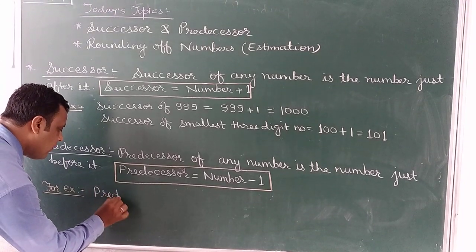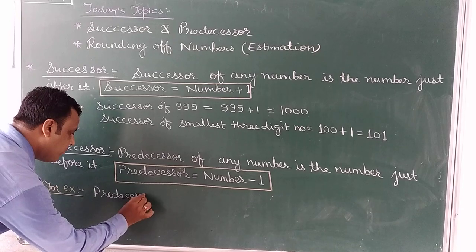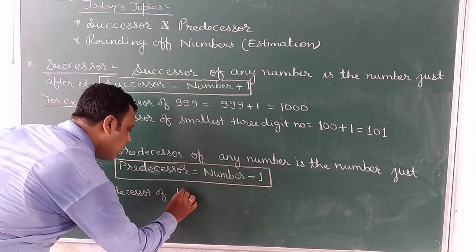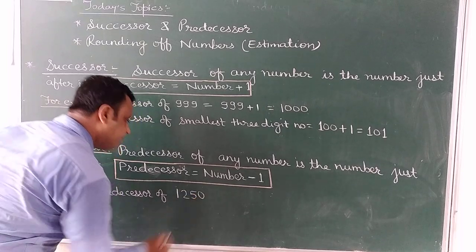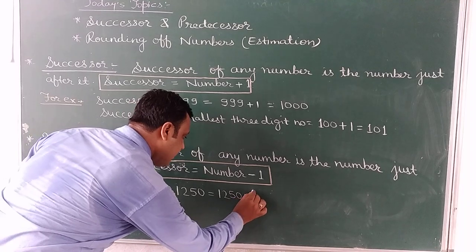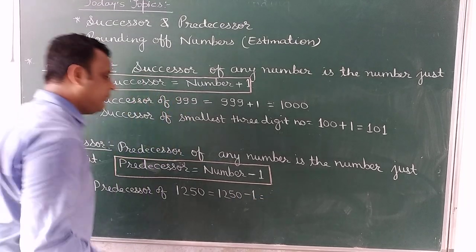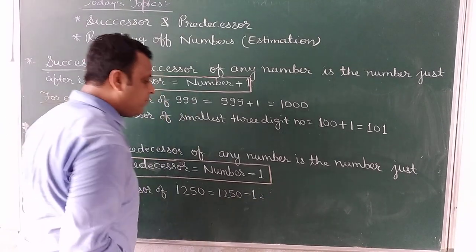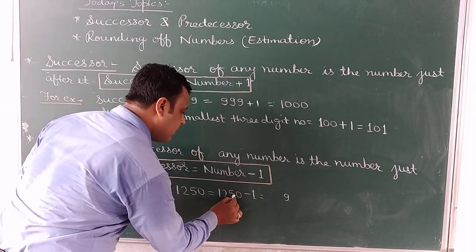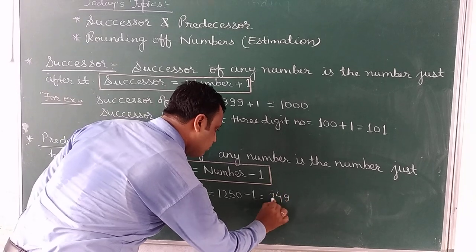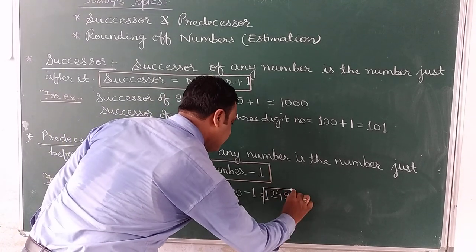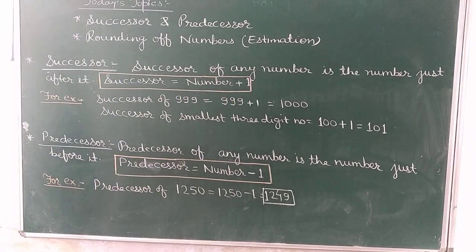For example, predication of 1250. We write 1250 minus 1. Now 0 minus 1 is not possible, so we borrow. It is 10 minus 1 equals 9, then 4, 2, and 1. So 1249 is the predication of 1250.